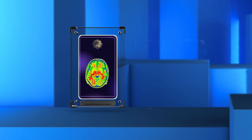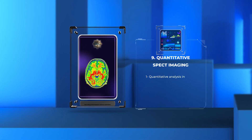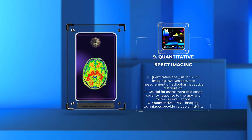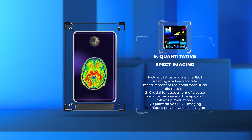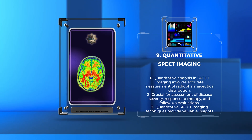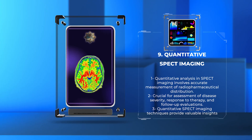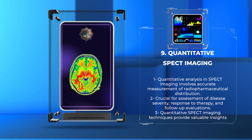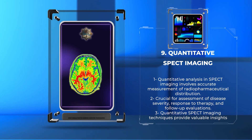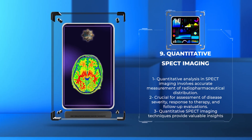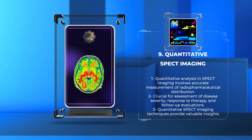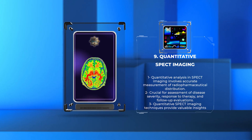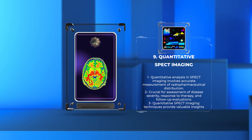Quantitative analysis in SPECT imaging involves the accurate measurement of radiopharmaceutical distribution within the body. This information is crucial for the assessment of disease severity, response to therapy, and follow-up evaluations. Quantitative SPECT imaging techniques, such as absolute quantification and relative quantification, provide valuable insights into disease progression and treatment effectiveness.